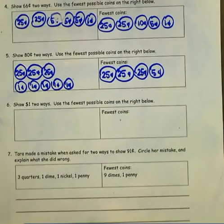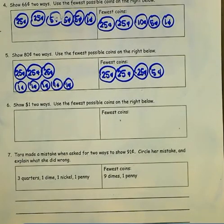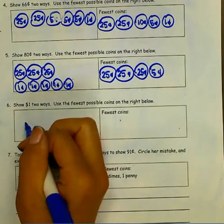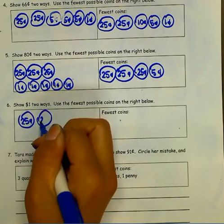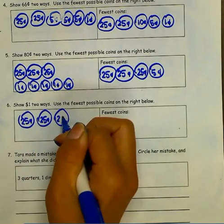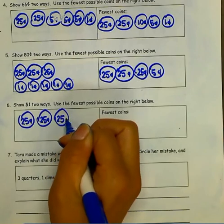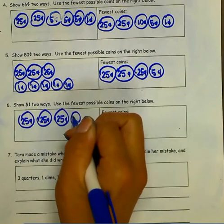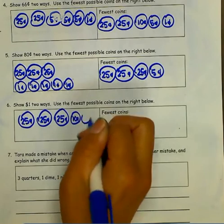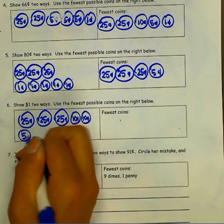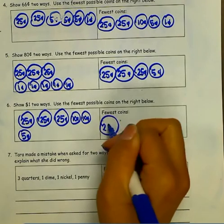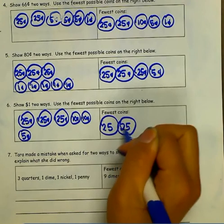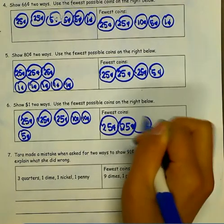Number 6: Show 1 dollar two ways. Use the fewest possible coins on the right below. I could use 3 quarters, 2 dimes, and 1 nickel. Using the fewest coins, I can use 4 quarters to equal 1 dollar.